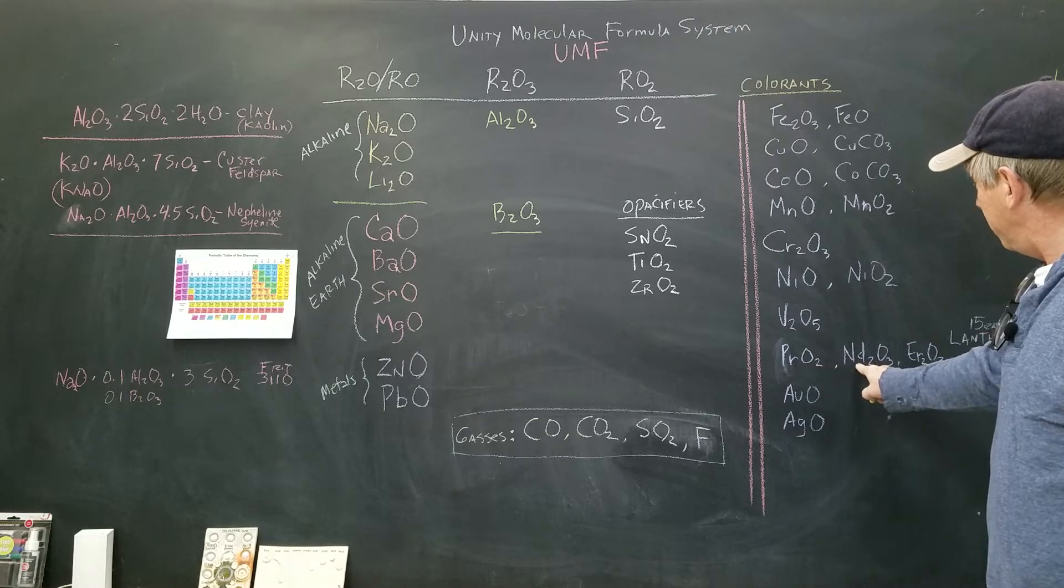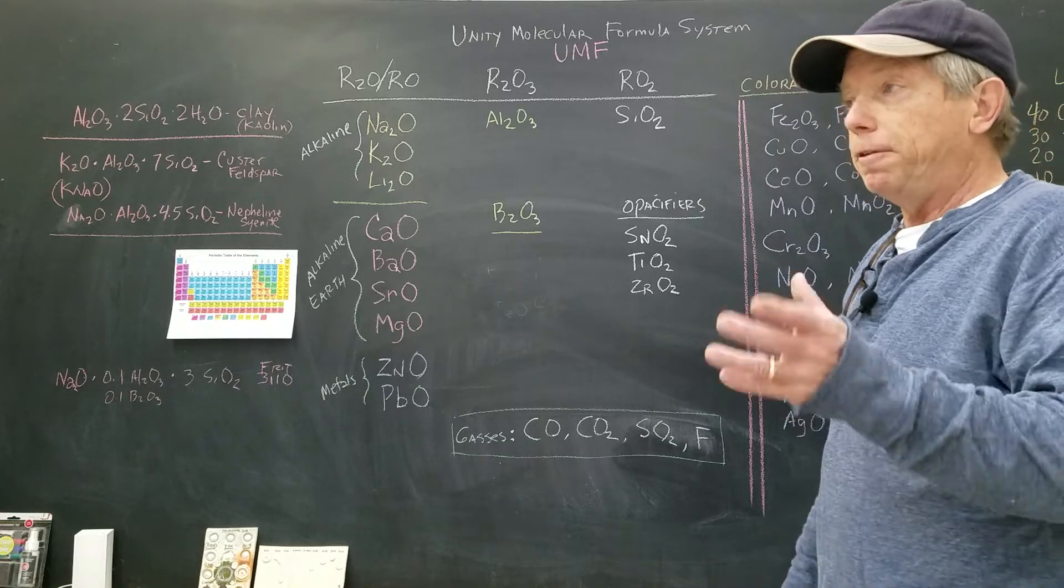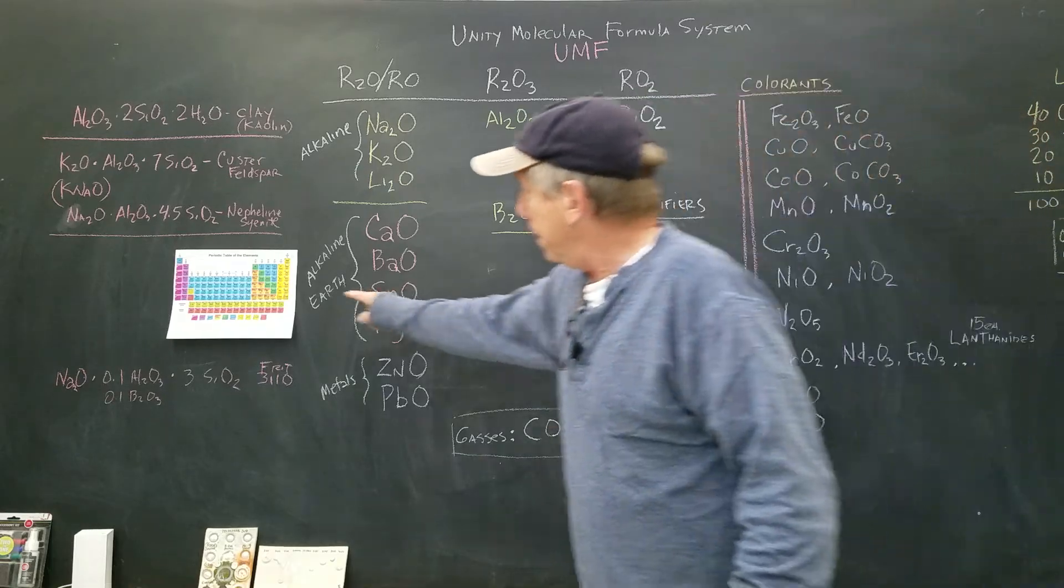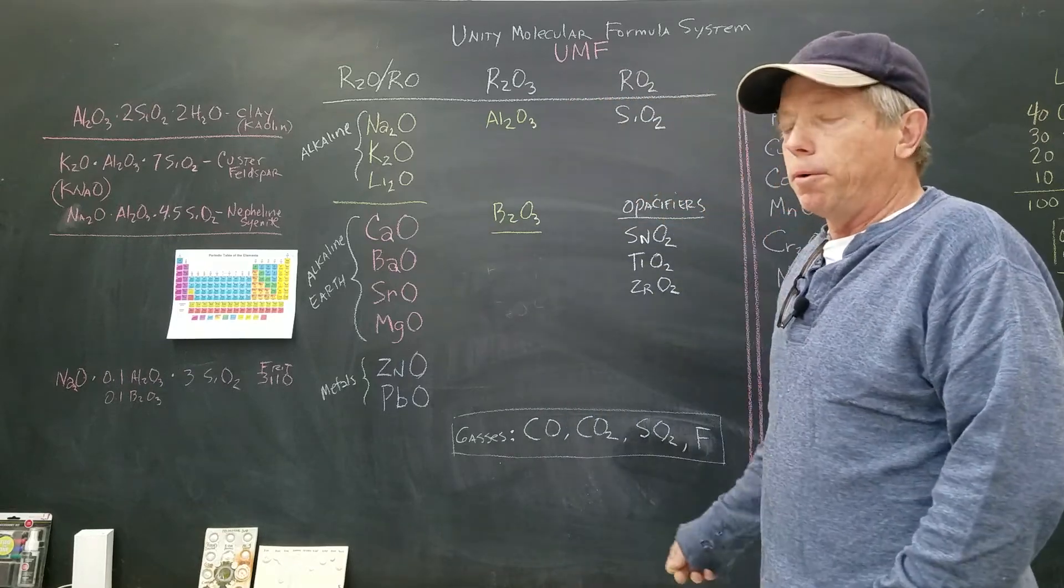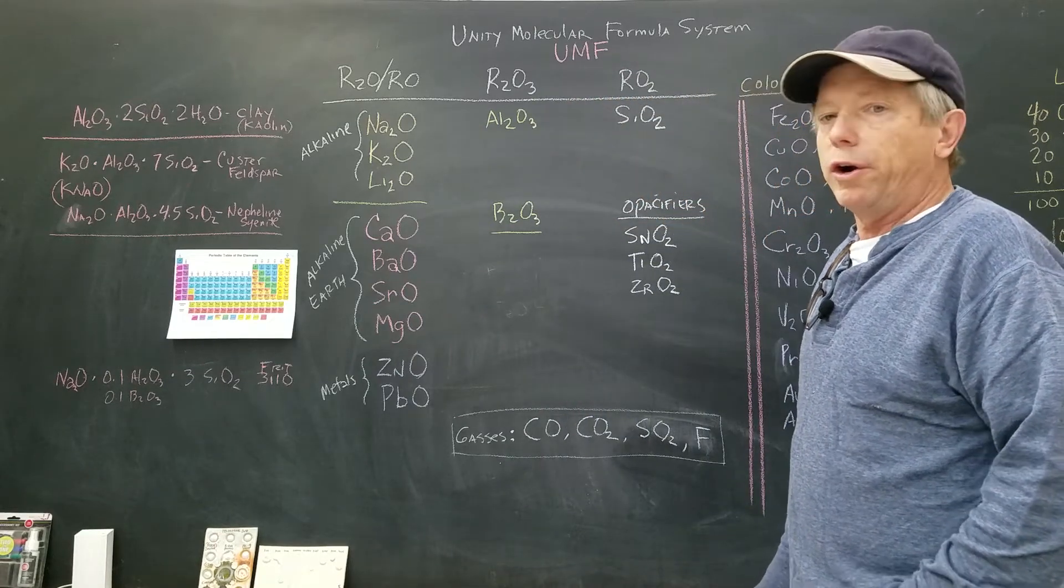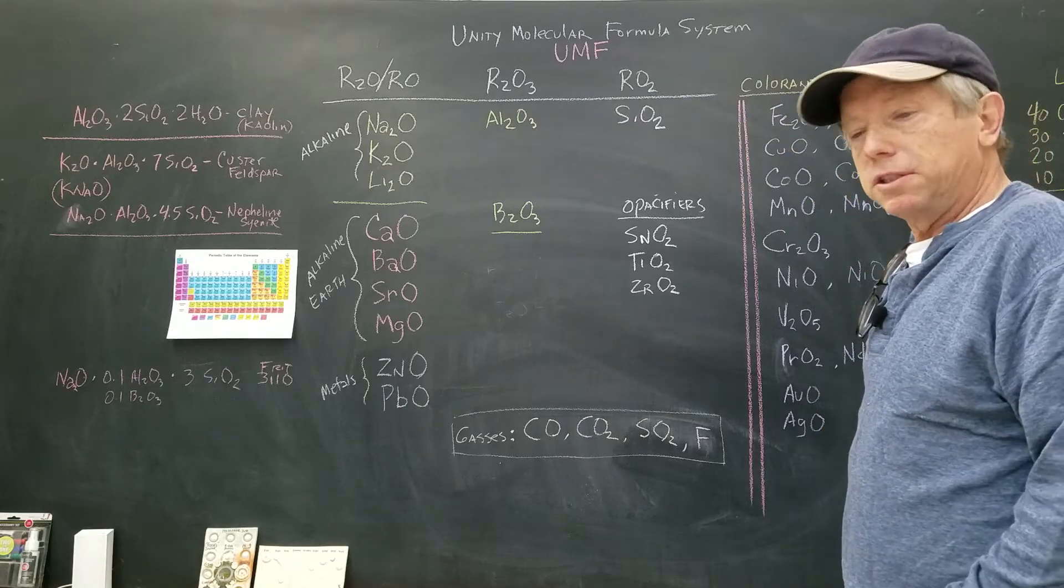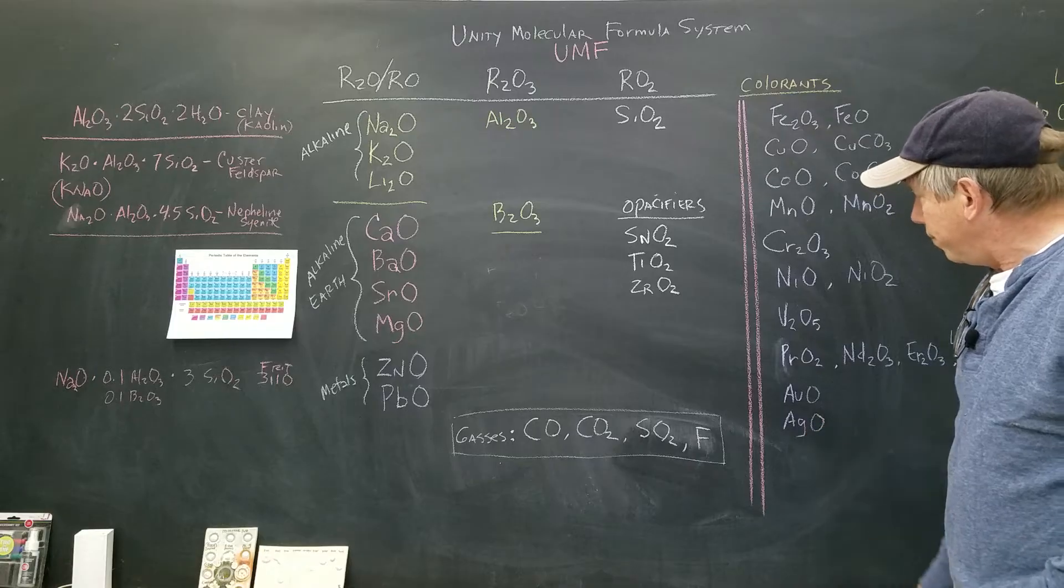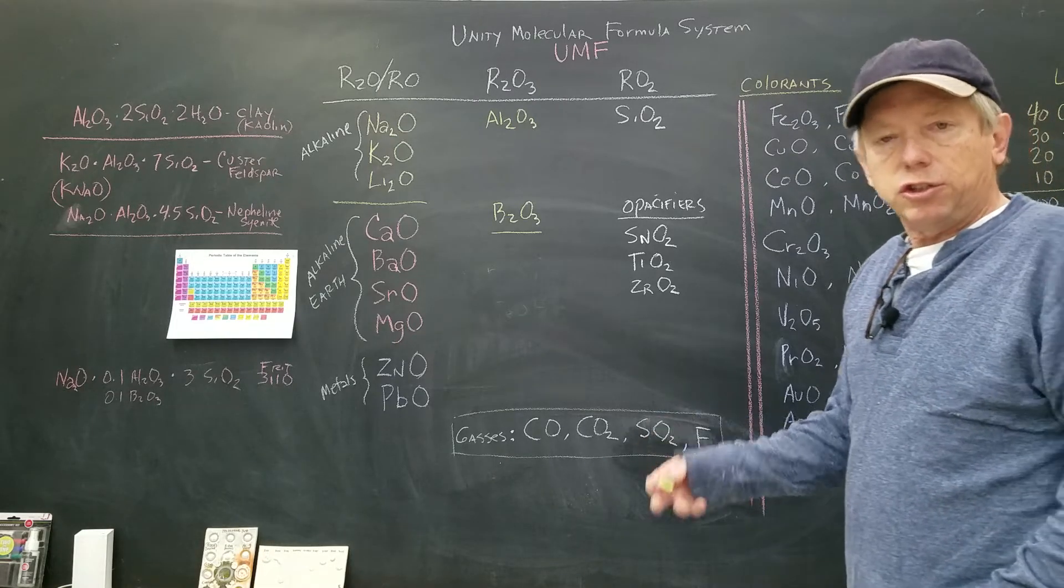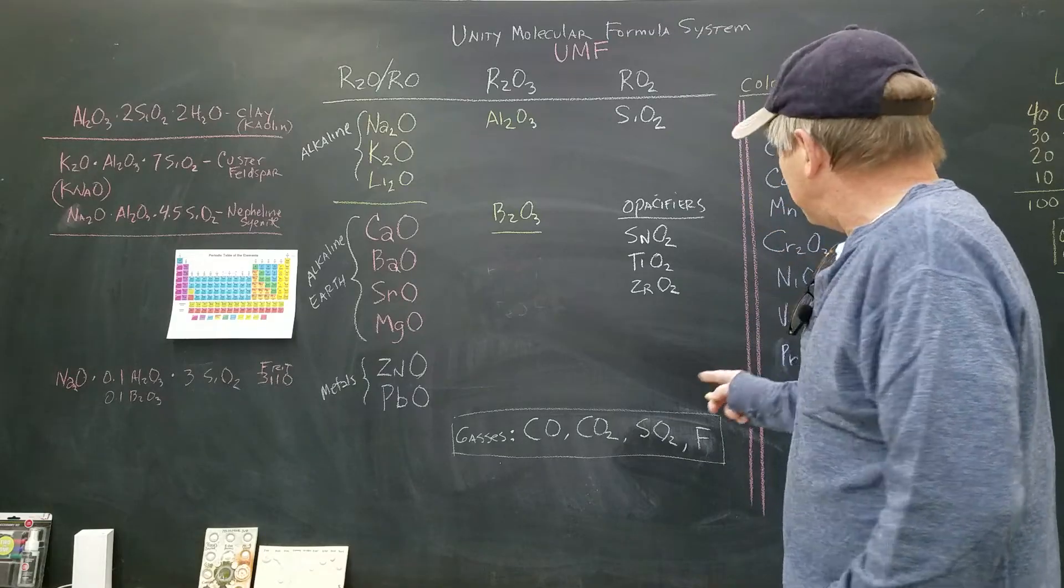Praseodymium, neodymium, erbium—those are all lanthanoid oxides. There's about 15 of them. They're on the periodic table right here. They are called rare earth elements. You get some nice colors, but they're extremely expensive. Then we have gold and silver. That's in lusters and things like that.